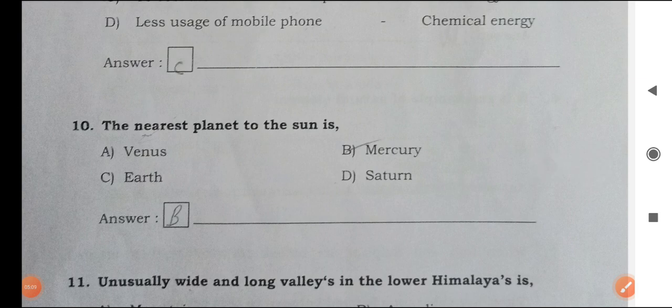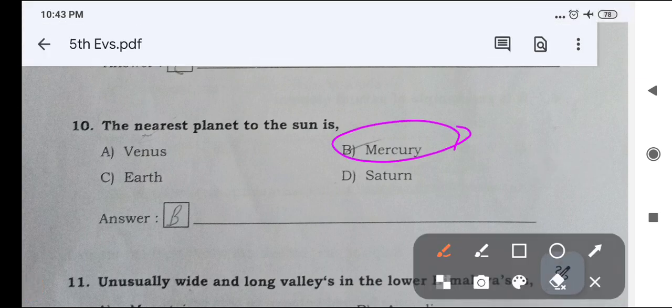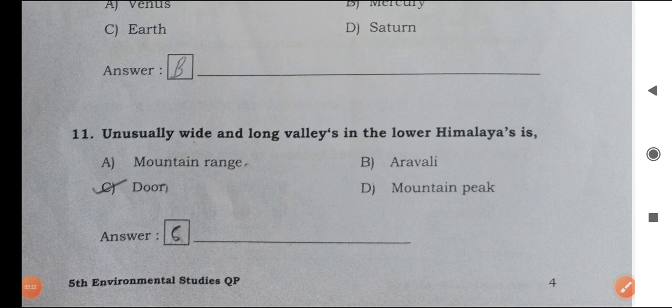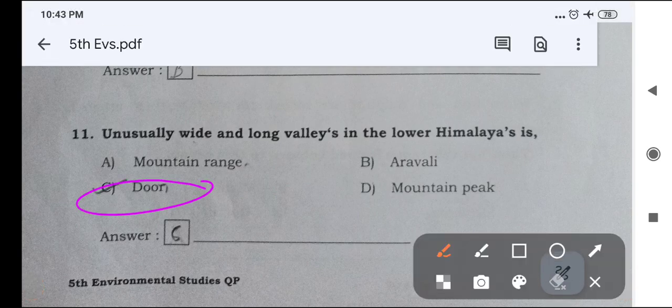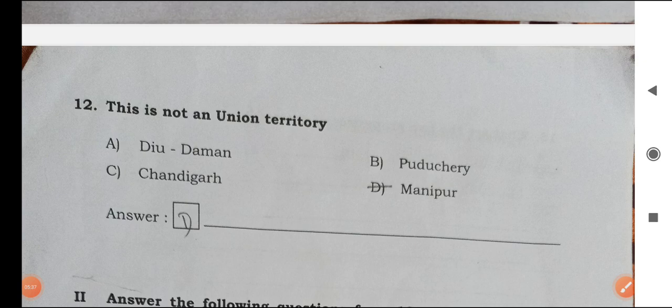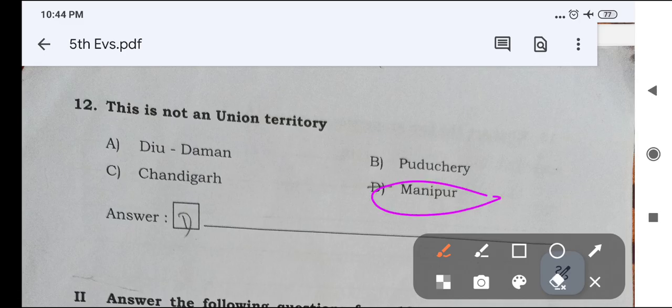The nearest planet to the sun is Mercury. Unusually wide and long valleys in the lower Himalayas is called Dune. Next, this is not a union territory. It is Manipur. Diu Daman is union territory. Chandigarh is also union territory. Puducherry is also union territory. Not a union territory is Manipur.